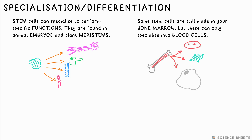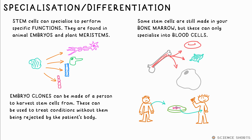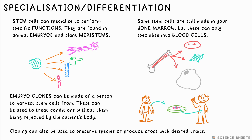We can use stem cells to combat conditions like diabetes and paralysis. People are now getting clones of themselves made, then harvesting the stem cells, as these won't be rejected by the person. Personally, I think this is a dystopian man-made horror beyond comprehension — you have to weigh up the ethical arguments for yourself. Cloning plants can be used to prevent species from becoming extinct or produce crops with specific characteristics.